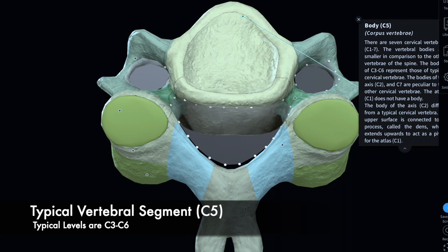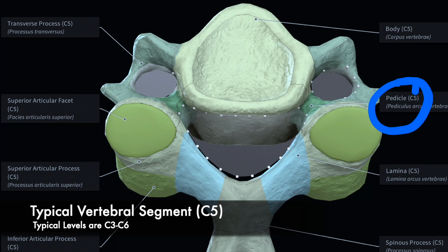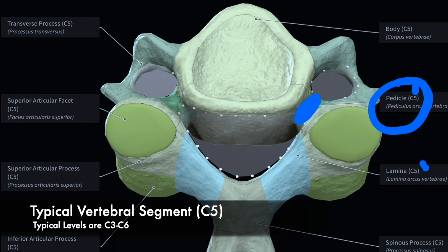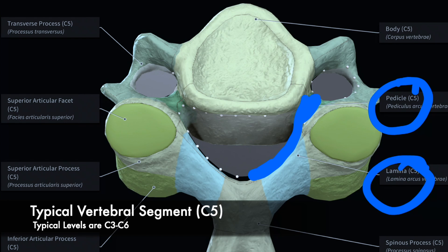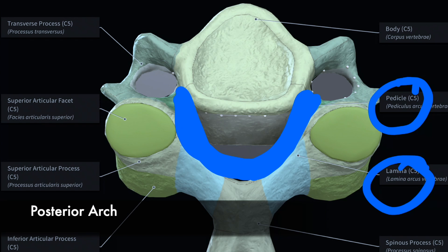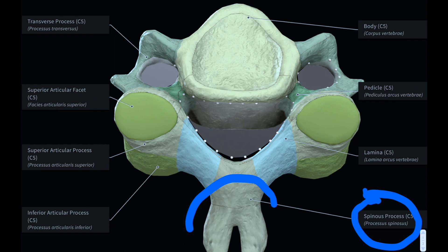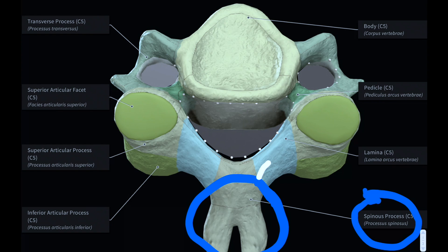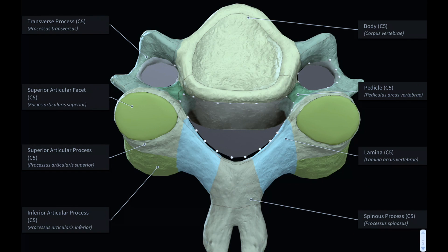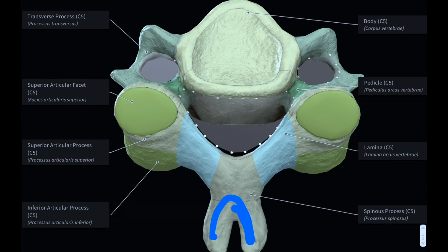Let's look at a typical vertebral level. First we have this pedicle right here. The pedicle along with the lamina contribute to this posterior arch, which I'm drawing here in blue. We also have the spinous process right here, which is a bony extension that comes out of the back. In a typical cervical vertebral level the spinous process is bifid, meaning it has two pieces sticking out. In many other spinal levels they're just a single one, but in typical cervical vertebral levels they're bifid.